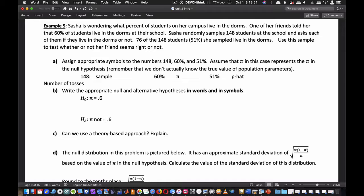This language drives us to use 'not equal to,' so Hₐ: π ≠ 0.6. In words, H₀: The proportion of students that live in the dorms is 60%. Hₐ: The proportion of students that live in the dorms is not 60%.